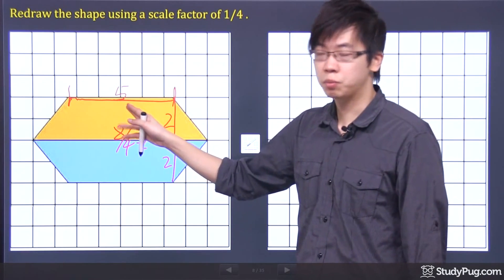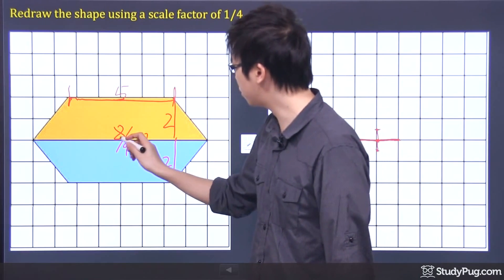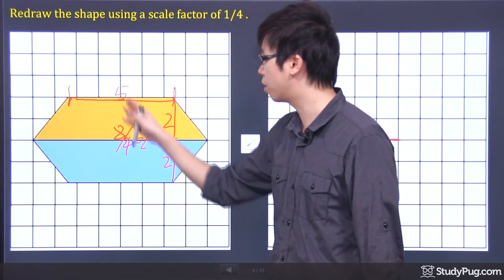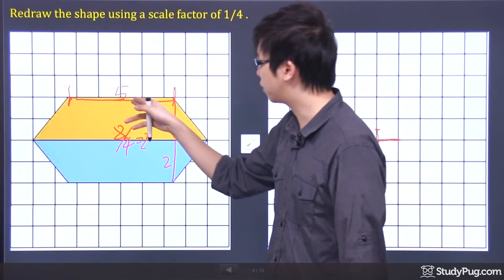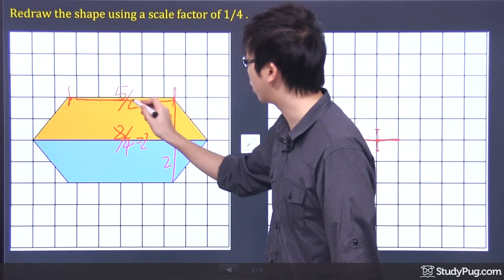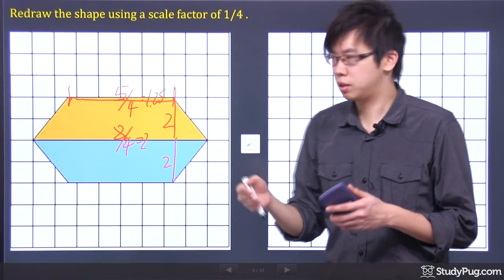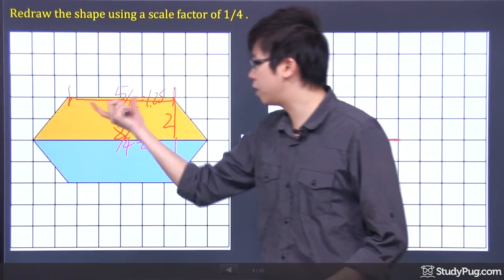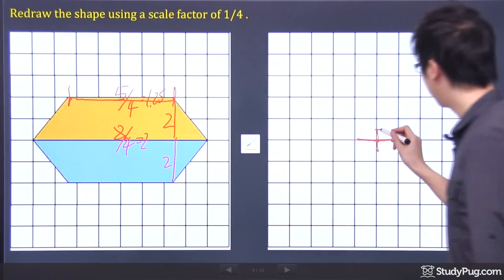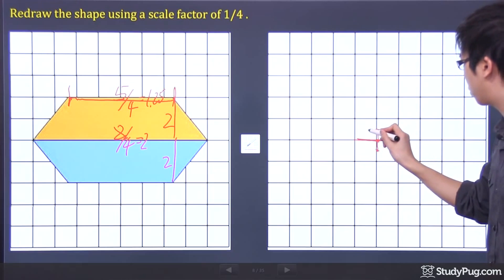Well, this is 5. From the center of the figure here, this is 5. So if I take this 5 and divide by 4, I got 1.25. The 1.25 is the total length.